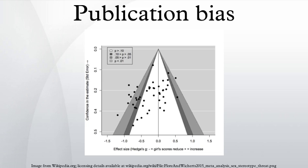Publication bias is sometimes called the file-drawer effect or file-drawer problem. The origin of this term is that results not supporting the hypotheses of researchers often go no further than the researchers' file drawers, leading to a bias in published research. The term 'file-drawer problem' was coined by the psychologist Robert Rosenthal in 1979.